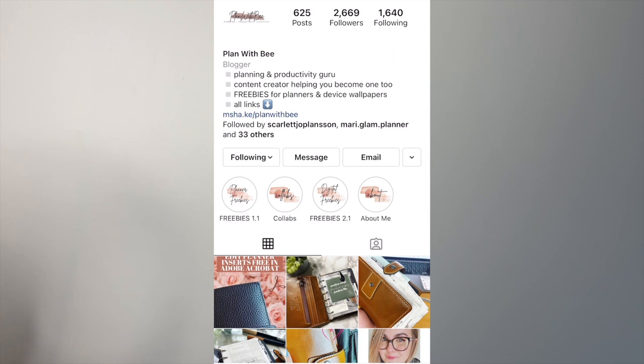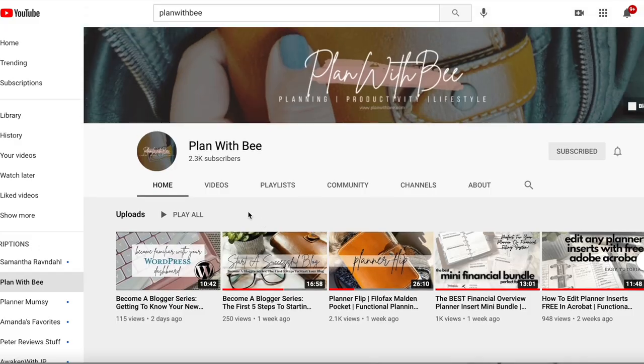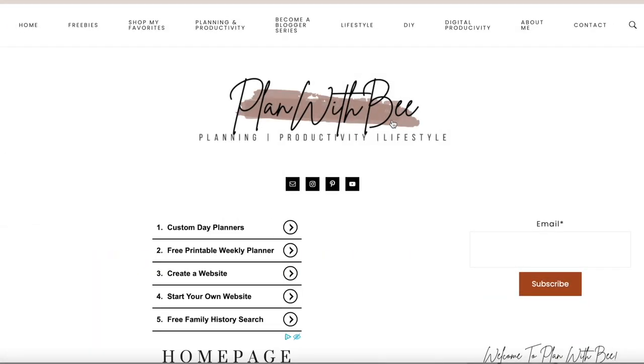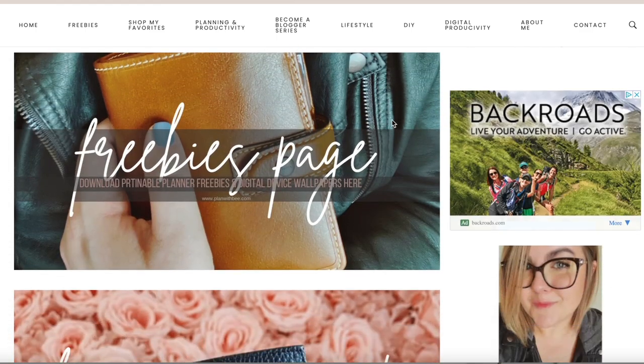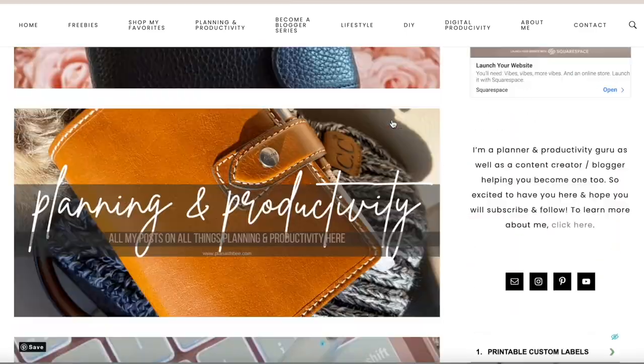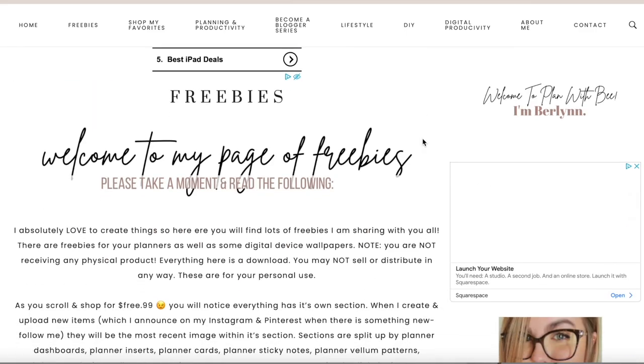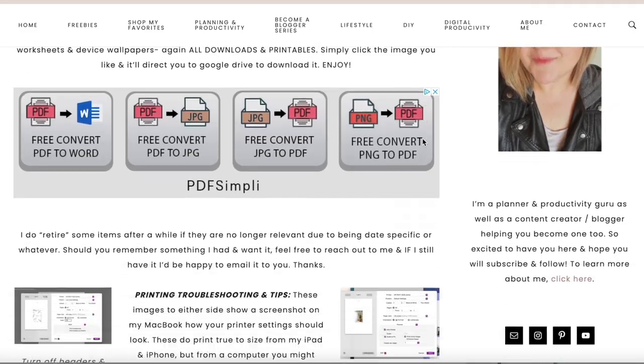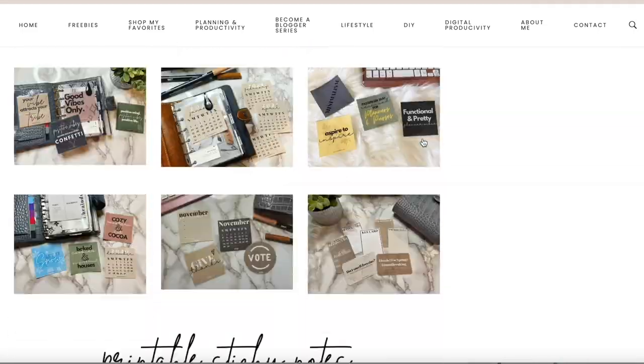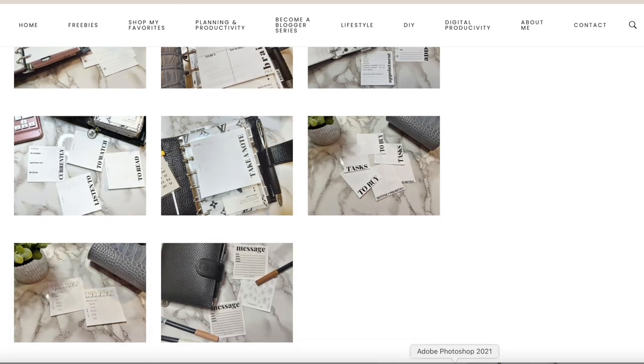So you can find Berlin on Instagram at underscore plan with B underscore, on YouTube at plan with B, and make sure you check out her blog at www.planwithb.com. She is always posting freebies on there for everybody in multiple planner sizes.